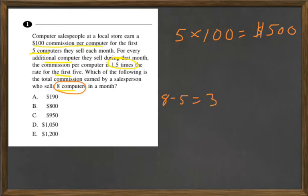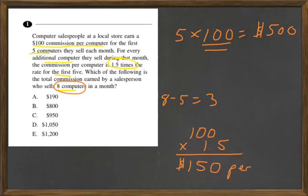and it's going to be 1.5 times the rate for the first five, which was $100. So then now I have to take 100 times 1.5, and that's going to equal 150. Just moving that decimal point over to the right two spots. So that's $150 per computer over the first five.